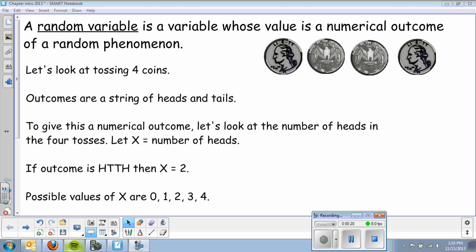So, let's say we toss four coins. The outcomes are a string of heads and tails. Each coin can either be head or tail, and those vary each time I flip four coins. We're going to start off by giving this a numerical outcome. Let's say we wanted to look at the number of heads in the four tosses, and we will let X equal the number of heads.